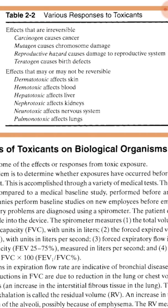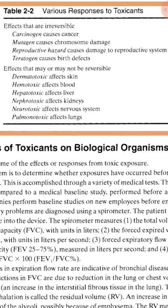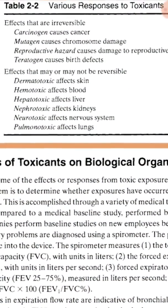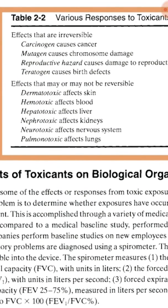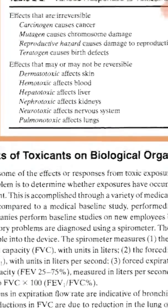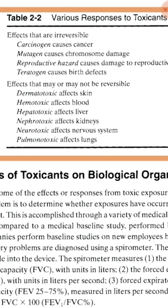Teratogens cause birth defects. Effects that are reversible may be cured by medication. These are classified as: dermatotoxic — affecting the skin; hematotoxic — affecting the blood; hepatotoxic — affecting the liver; nephrotoxic — affecting the kidneys; neurotoxic — affecting the nervous system; and pulmonotoxic — affecting the lungs. These are the major parts for studying toxicology: entry, elimination, and effects.